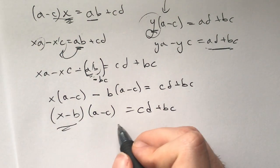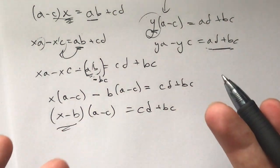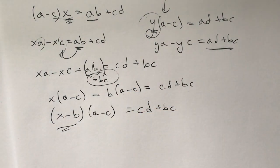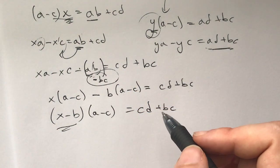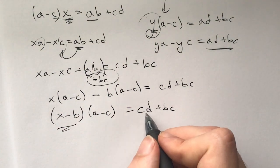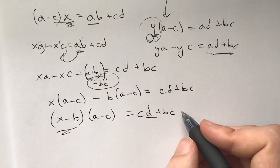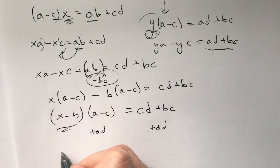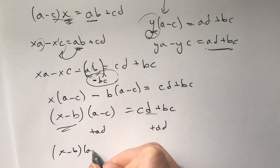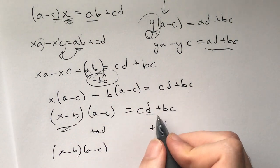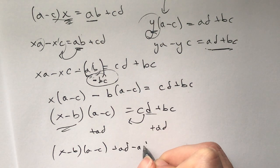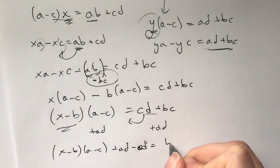What did I do? I subtracted, so what I actually did here was I added. So let me add ad to both sides. That's (x-b)(a-c) plus ad. Let's move this to the other side, then we have ad minus cd equals bc plus ad.